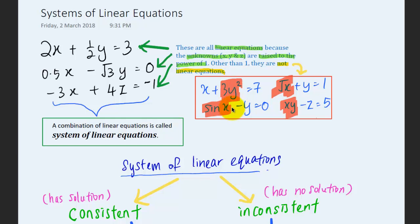For a linear equation, the unknowns cannot be expressed inside other functions. For example, you can't express x in the form of sine x, and you can't have a multiplication of both unknowns — in this case, x times y.